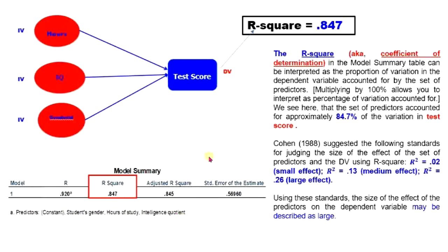Your test score is explained by the independent variables. The effect size can be high, low, or medium. Cohen (1988) suggests the following standards for judging the size of the effect: R-square = 0.02 is a small effect; R-square = 0.13 is a medium effect; and R-square = 0.26 is a large effect.